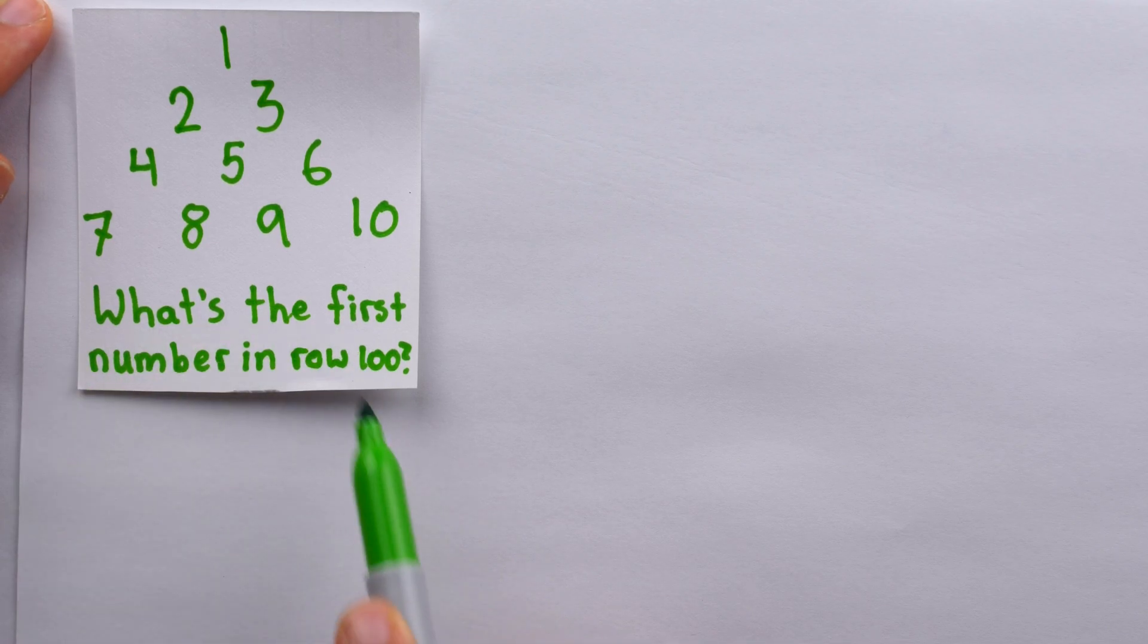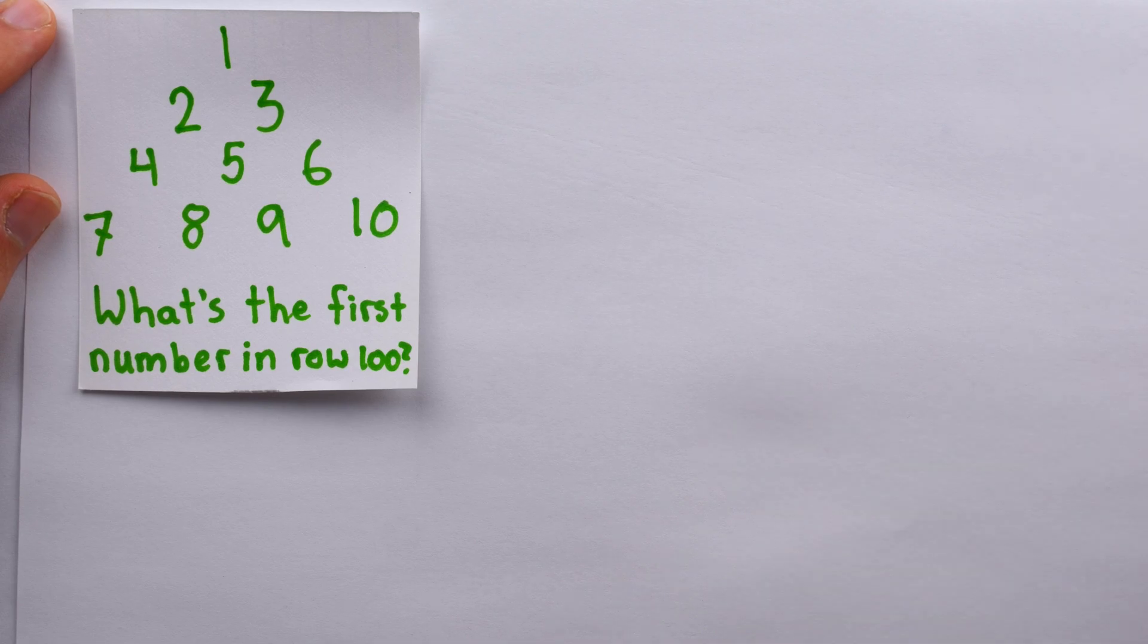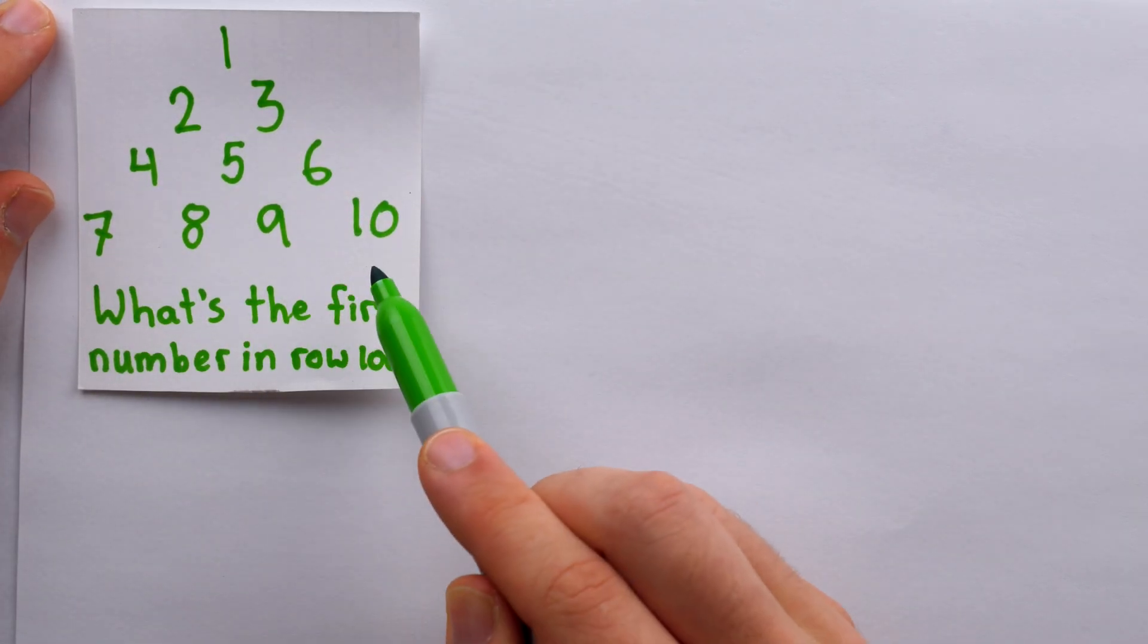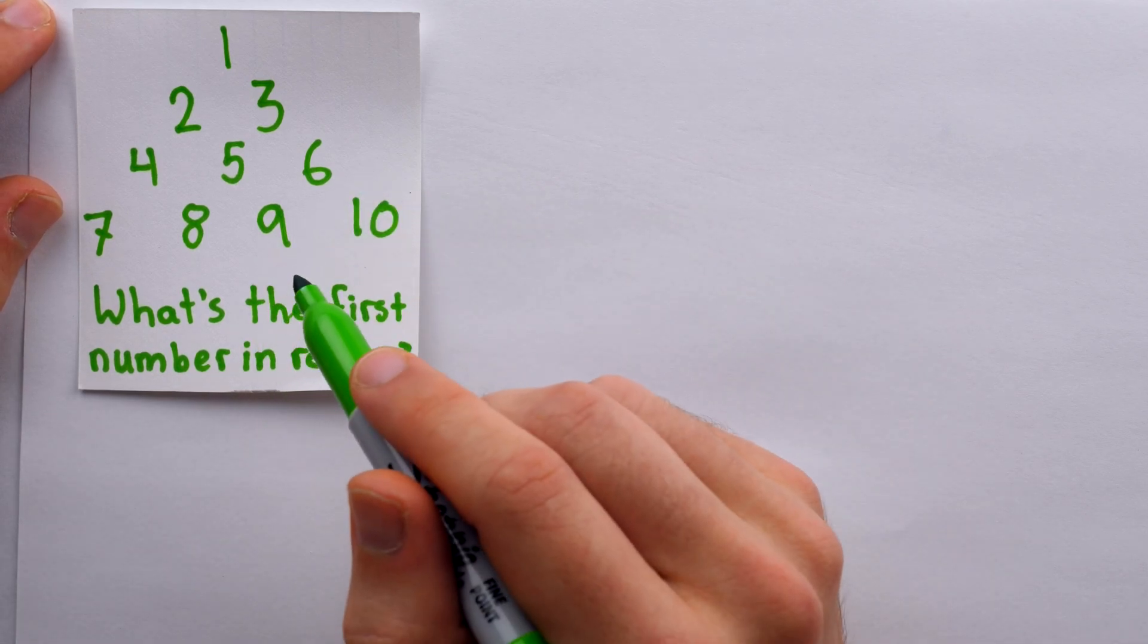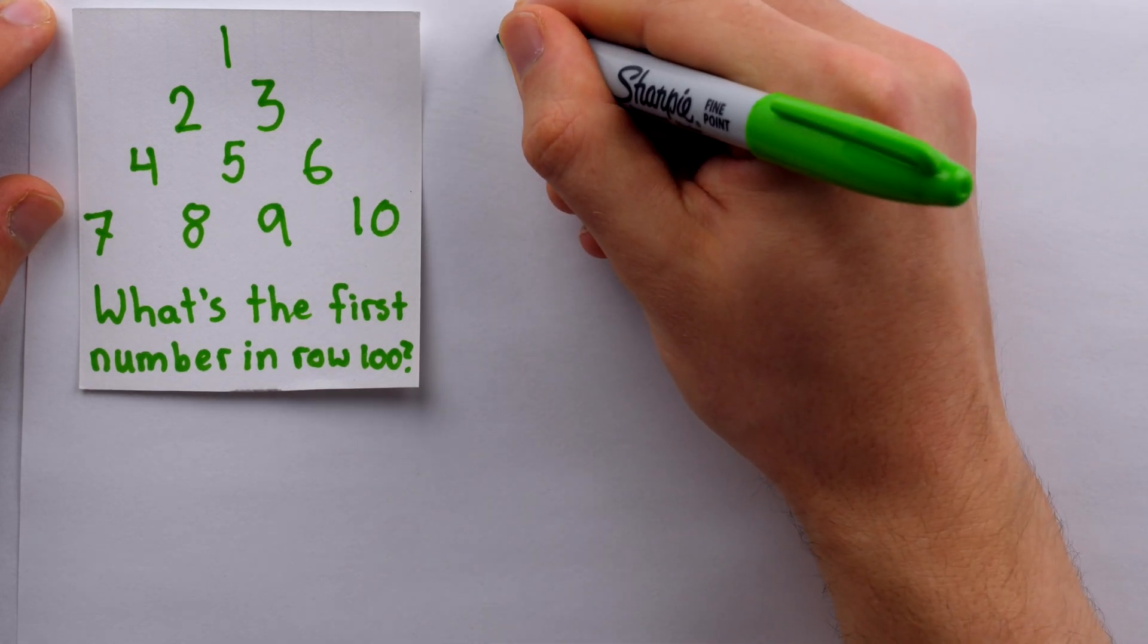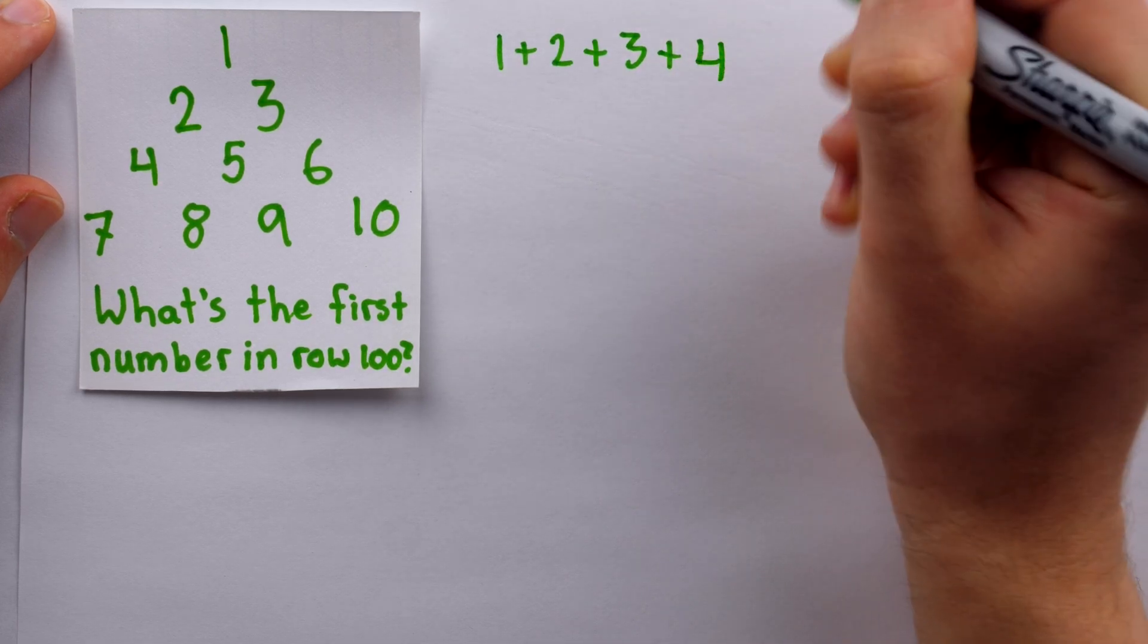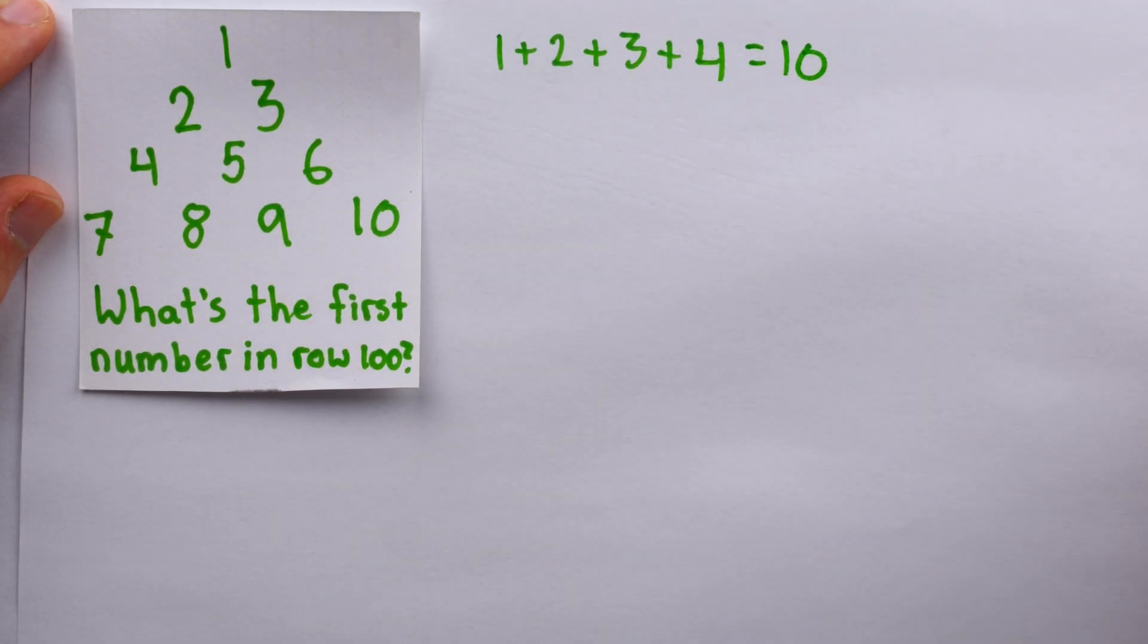We're asked to find the first number in the 100th row. We have to notice that the number at the end of each row is simply the number of numbers that have occurred up to that point, since the numbers start at one and are counting up by one. For example, at the end of the fourth row, 10 numbers have occurred, which is why the last number there is 10. You see, that's equal to 10.